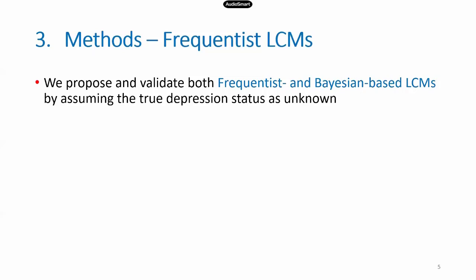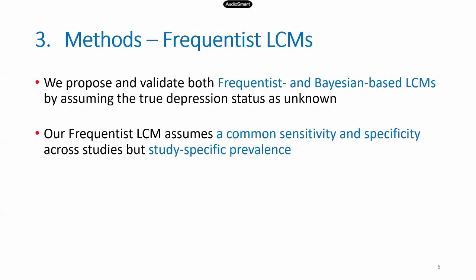We propose a frequentist approach and a Bayesian approach. We assume that the true depression status is unknown. In the frequentist approach, if you imagine the 2×2 diagnostic test accuracy table with four cell frequencies, those will naturally be described using a multinomial distribution.